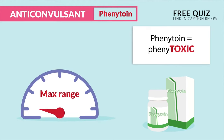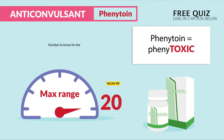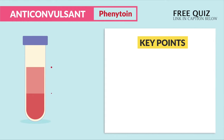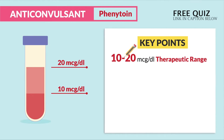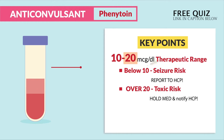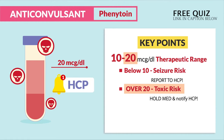The memory trick is we call phenytoin 'phenytoxic.' Like most toxic drugs, the max range is 20 — and that's the number to know for the NCLEX. The big key points: 10 to 20 is the therapeutic range. Below 10, we have to report to the HCP since there's a huge seizure risk. Over 20, we hold the drug and notify the HCP because of the huge toxicity risk.